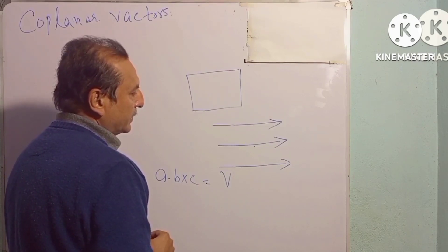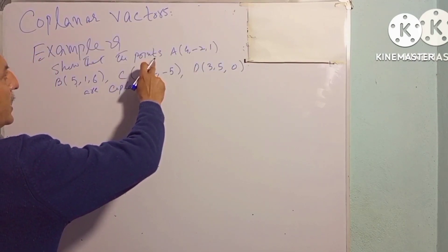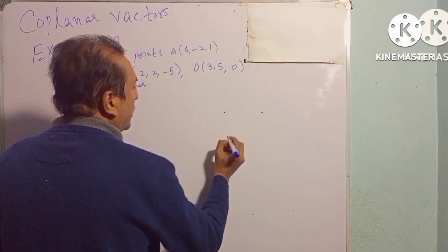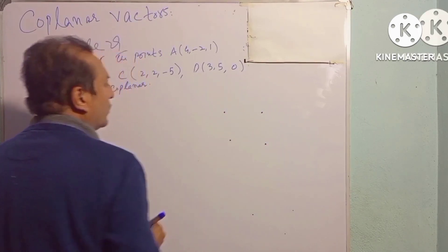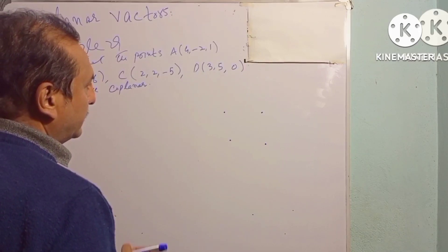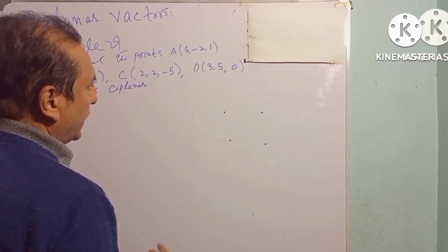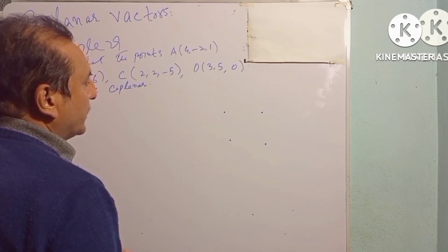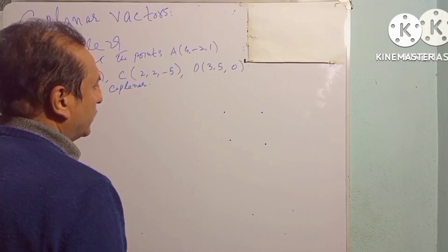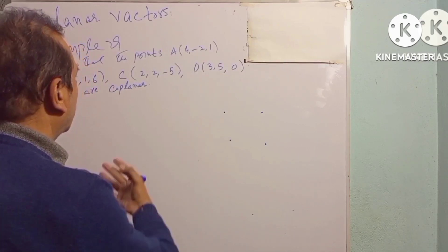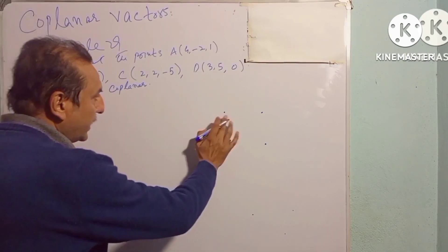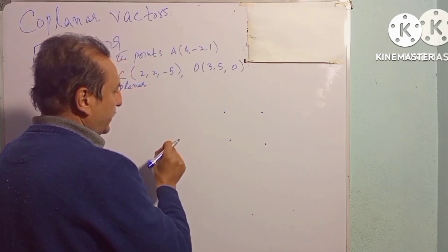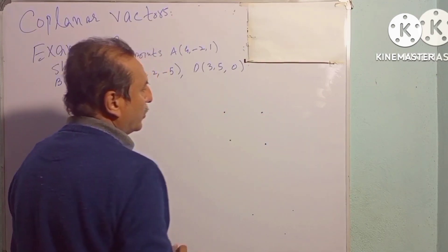تو اب ہم اسے ایک example سے سمجھتے ہیں۔ Example یہ ہے کہ points A, B, C اور D coplanar ہیں — یعنی یہ چار points ایک ہی plane پر ہیں۔ ہم اسے vector بنا لیتے ہیں، تین vectors بن جائیں گے، پھر دیکھیں گے کہ اگر ان three vectors کا scalar triple product zero آتا ہے تو یہ تینوں vectors coplanar ہوں گے، اور پھر یہ four points بھی coplanar ہیں۔